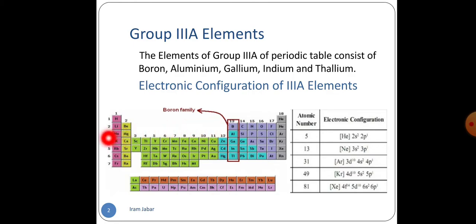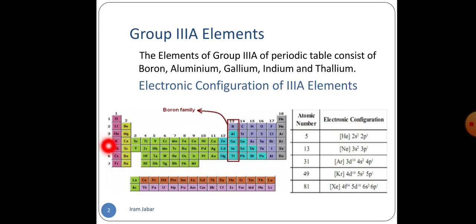We can see these 3 valence electrons from the electronic configuration of Group 3A elements. If we see the periodic table, the period number of each element represents its valence shell, while the group number represents the number of valence electrons. As in the case of boron, boron belongs to the 2nd period, so its valence shell is 2 and it belongs to Group 3A, so it contains 3 valence electrons present in S and P subshells as 2S2, 2P1. Same is the case with aluminium — it belongs to the 3rd period, so its valence shell is 3, and it contains 3 valence electrons present as 3S2, 3P1.